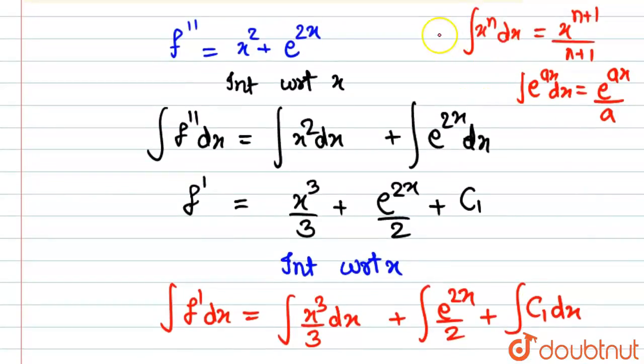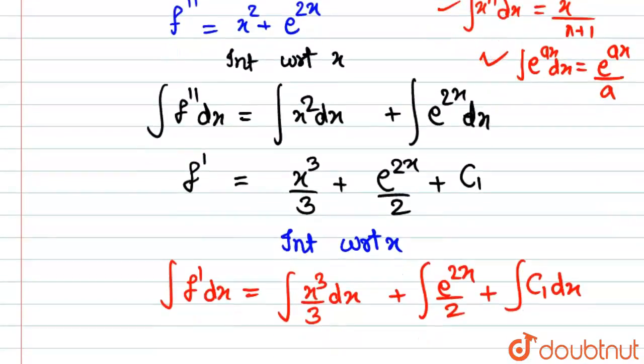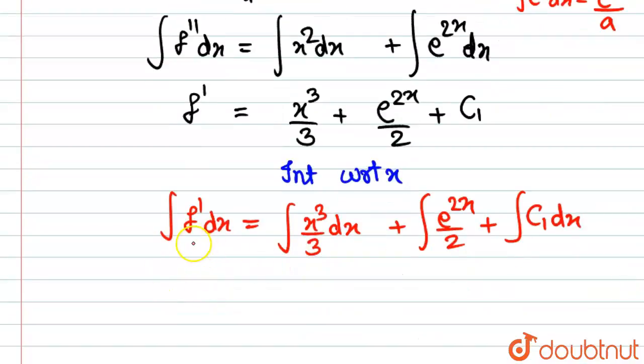So applying these same rules again in the integral, the derivative integrated one time will give you the function itself which is f equals to 1/3 taken outside and this will become x raised to 4 divided by 4.